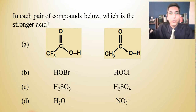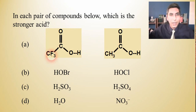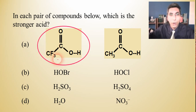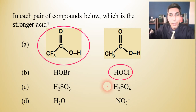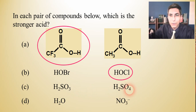Let's apply these rules. In each pair, which is the stronger acid? First, for two carboxylic acids where one has a fluorine substituent in the R group — fluorine is highly electronegative, so that one is the stronger acid. Second, HOBr versus HOCl — the more electronegative halogen is chlorine, so HOCl is the stronger acid. Third, H₂SO₃ versus H₂SO₄ — more oxygens means stronger, so H₂SO₄ is stronger.